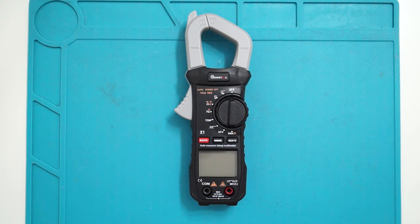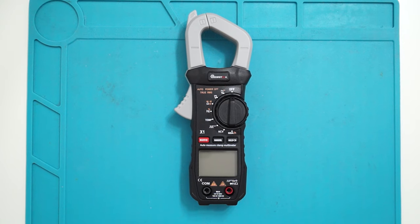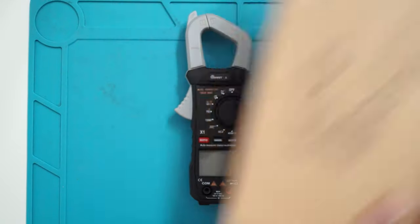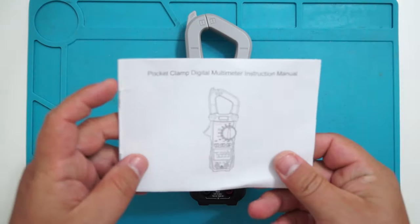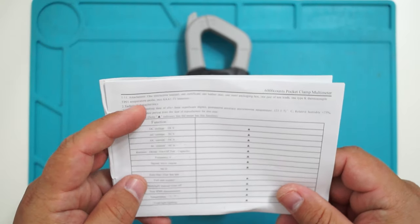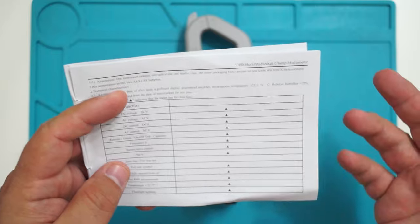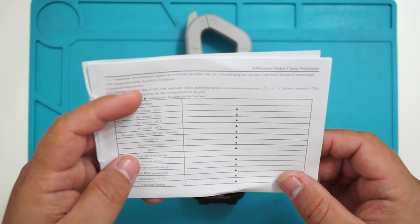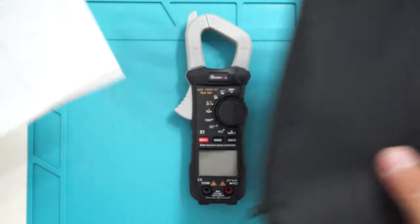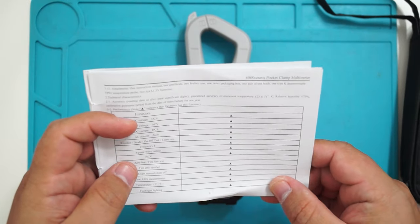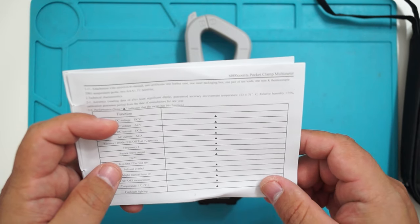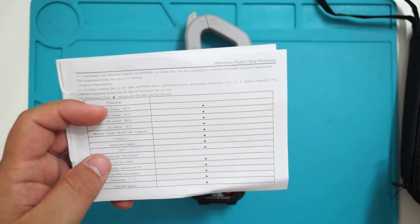Let me show you what you get if you decide to buy this clamp meter. You get the clamp meter in this box, and inside the box you will find a user manual. The user manual says the box should contain this instruction manual, one certificate which I didn't receive, one leather case. You actually get a case but it's not leather, of course that's not a problem, the outer packaging box.